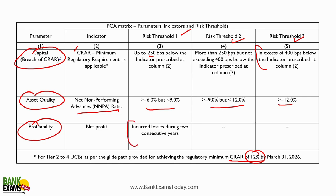For net profit - if the primary urban cooperative bank incurred losses during the last two consecutive years, it would be under the PCA framework. Please remember this table, it's very important.